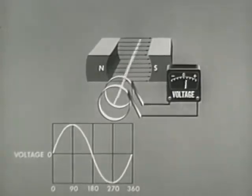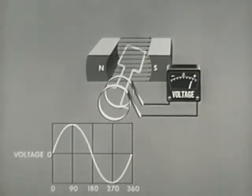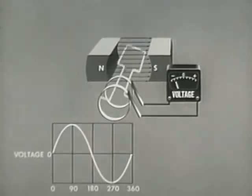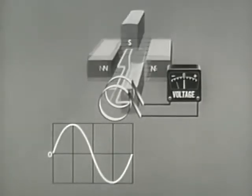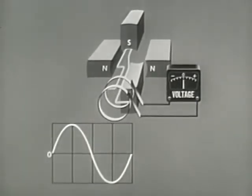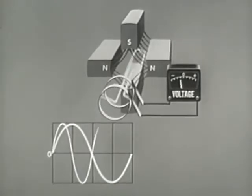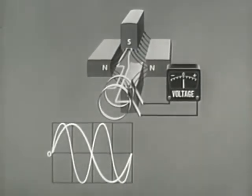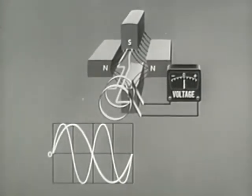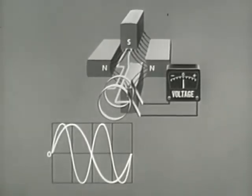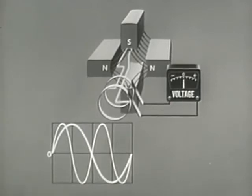In this example, the two-pole machine used has one magnetic field. As the armature makes one revolution, one magnetic field is traversed. Adding another pair of poles adds another magnetic field — now there are two magnetic fields. The armature moves through one field in half a revolution. In one complete revolution of 360 mechanical degrees, the armature passes through two fields equal to 720 electrical degrees and two cycles of AC are generated.